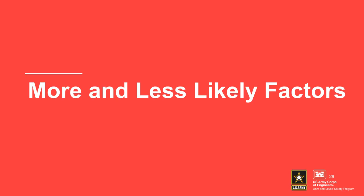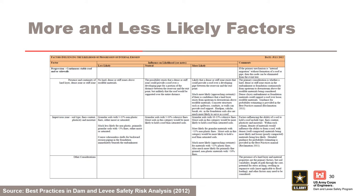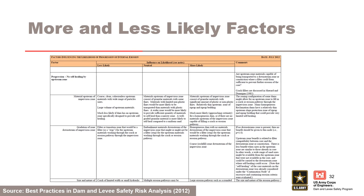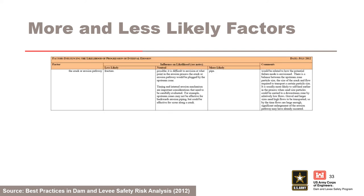The following table from the Best Practices Manual can be used to help assess the likelihood of progression of internal erosion. It can be used as a starting point, but the risk assessment team must develop project-specific more likely and less likely factors to guide subjective probability estimation. The table addresses: a continuous stable roof and/or sidewalls; upstream flow limitation; and self-healing by an upstream zone.